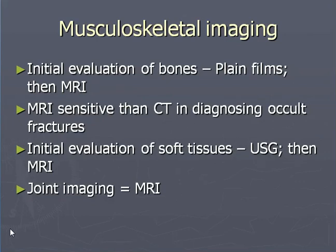Now musculoskeletal imaging. MR has very good differentiation of soft tissues as compared to CT. Initial evaluation of bones is done with plain X-rays and then MRI. MRI is more sensitive than CT in diagnosing occult fractures. For initial evaluation of soft tissues, ultrasound is done first and then MRI. Joint imaging is done with MRI. Fatigue fractures are very well picked up by MR as compared to CT.